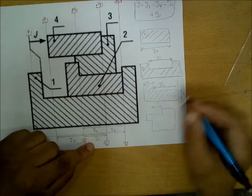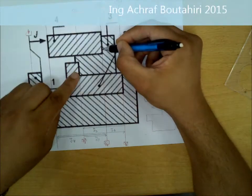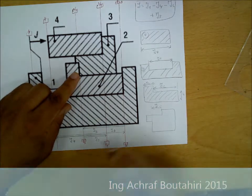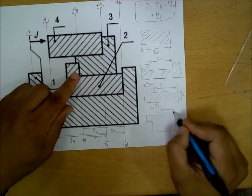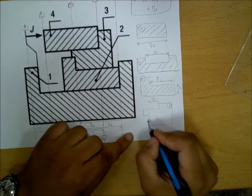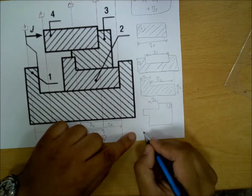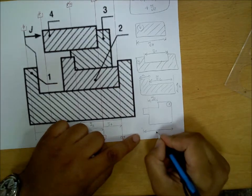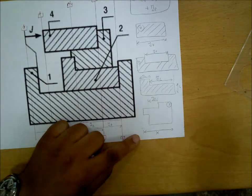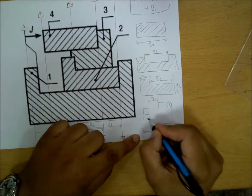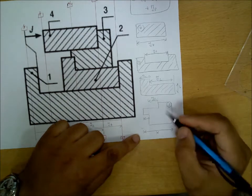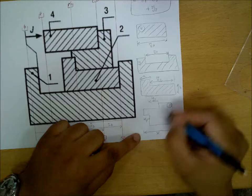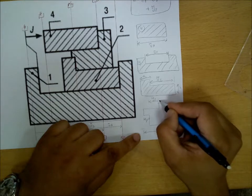And we can calculate G3 by making this operation: we can take this distance in X, and this distance, which will be already defined, and this distance, which is Z. So X will equal G3 plus Z plus U. So we can define distance number 3.